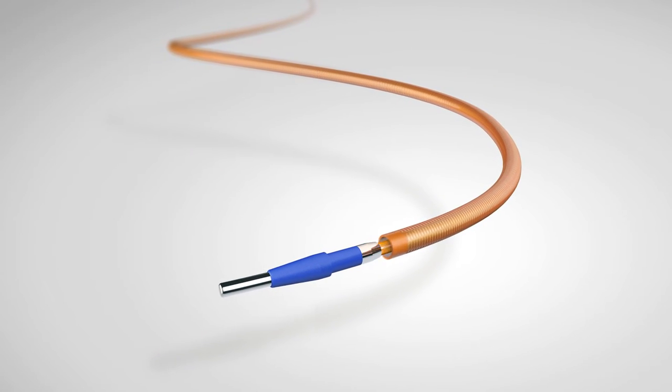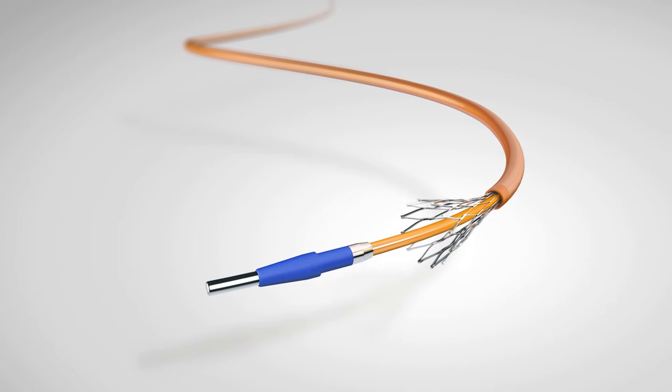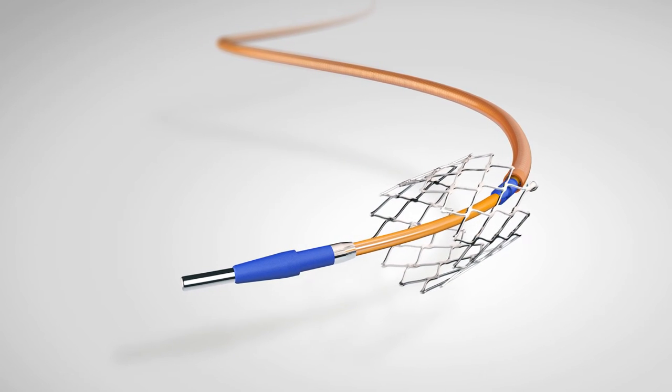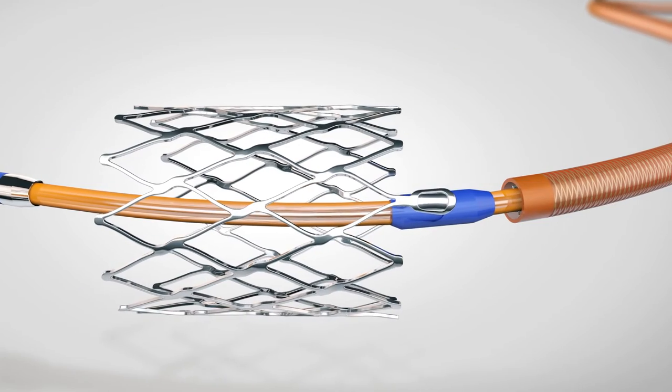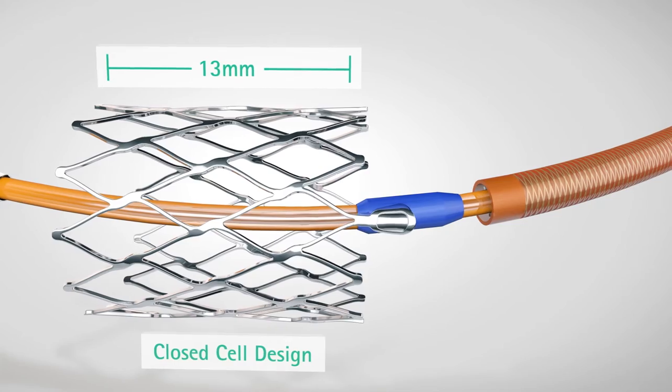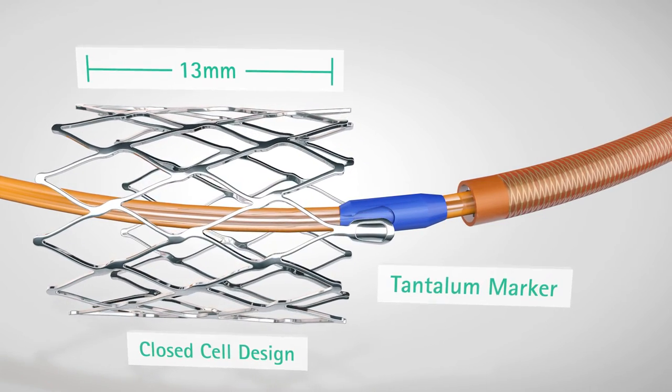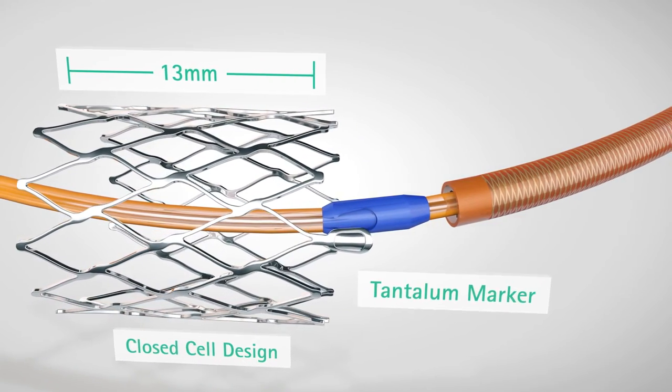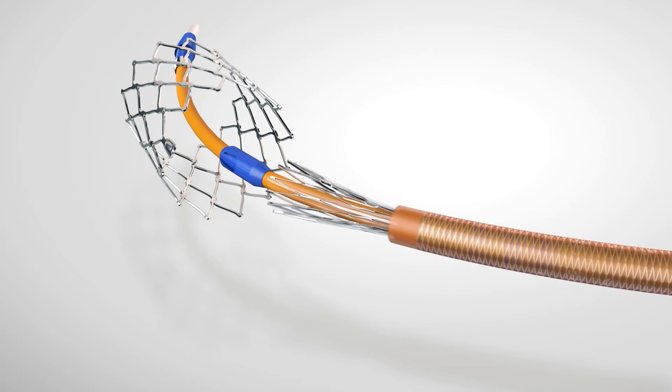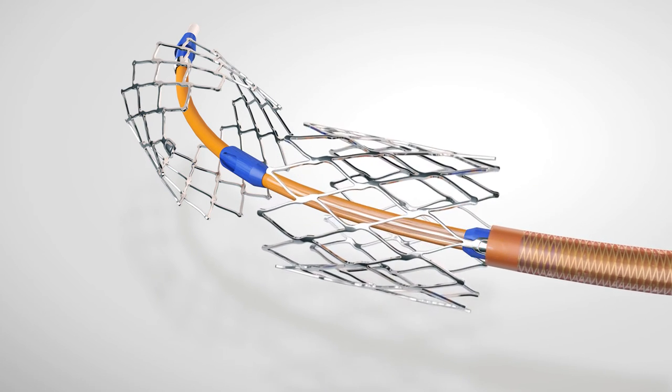Each self-expanding nitinol stent has a high radial force. The 13mm long stents have a closed cell design with tantalum markers on the proximal ends of the stents. The tantalum markers also help to prevent stent jumping.